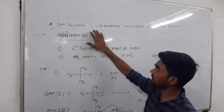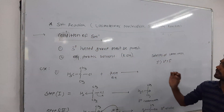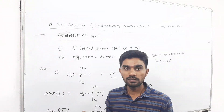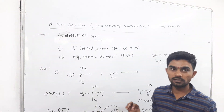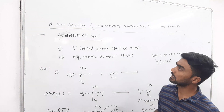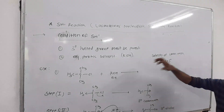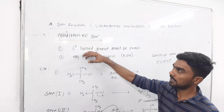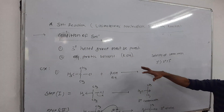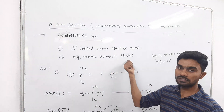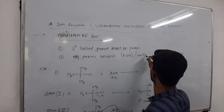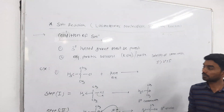To recap: SN1 reaction is a unimolecular nucleophilic substitution reaction — a single molecule reaction. The condition is that a tertiary halide group must be required. Halide means fluoride, bromide, chloride, or iodide. The second condition is an aqueous polar solvent — KOH, NaOH, or aqueous NaOH is required.